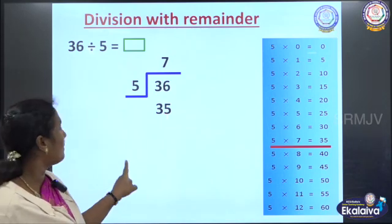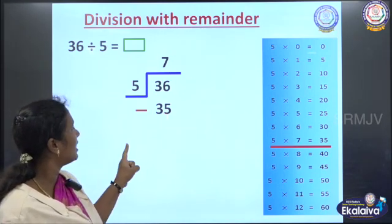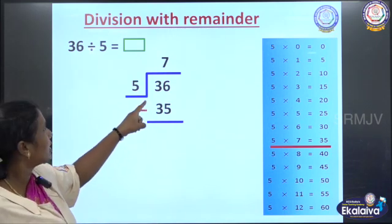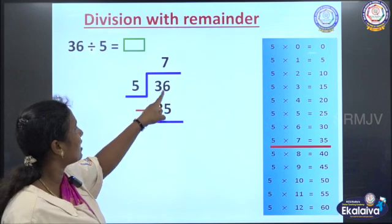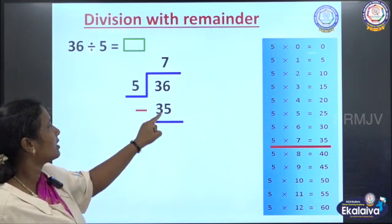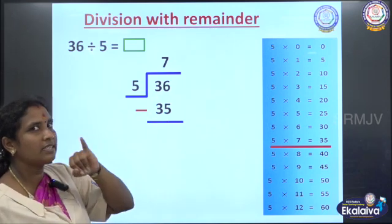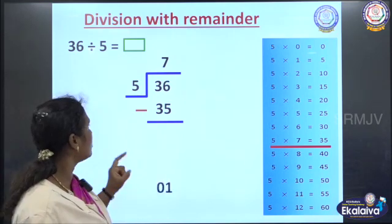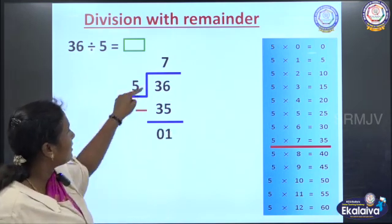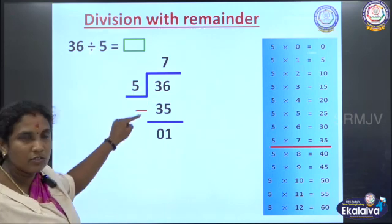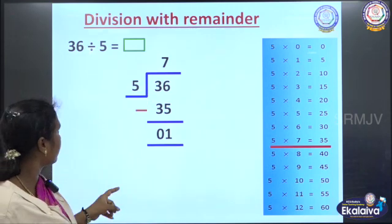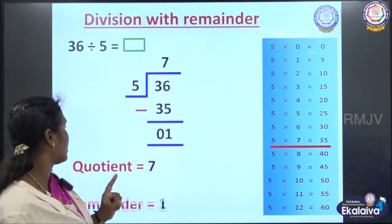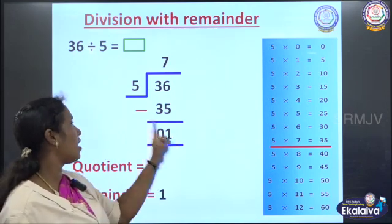Next, we place the subtraction symbol and subtract these two numbers. Here we have 5 and 6. Count from 5 up to 6 — how many fingers do we open? One finger. So we write 1 here. We have 3 and 3 — same number — so we place 0. So quotient is 7 and remainder is 1.